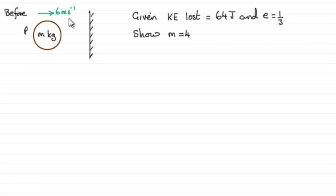before it hits this fixed wall and we're told then that in the impact the kinetic energy lost equals 64 joules and the coefficient of restitution which I've called E is equal to a third and we've got to show that the mass of the particle P m equals 4 so how do we do a problem like this well